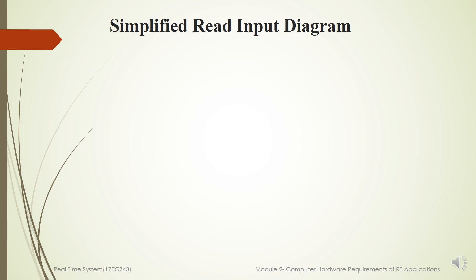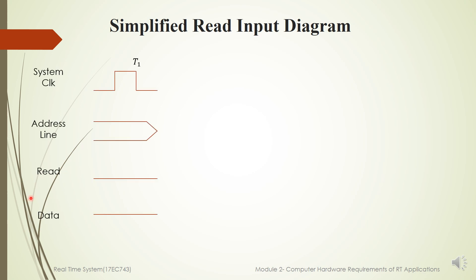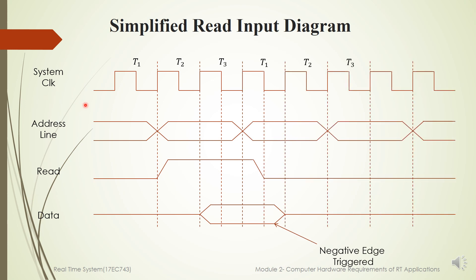Simplified Read Input Diagram. The transfer of data is governed by CPU timing. For this system, it is assumed that data transfer requires three machine cycles: T1, T2, T3. The address lines begin to change at the beginning of cycle T1 and are guaranteed to be valid for the entire T2 cycle. When the address is guaranteed valid, the read line also becomes active. The DIR, that is Digital Input Register, has to provide stable data at the negative going edge of the clock during T3 cycle. The actual time taken to transfer data from the data bus to the CPU may be shorter than the time for which data is valid.